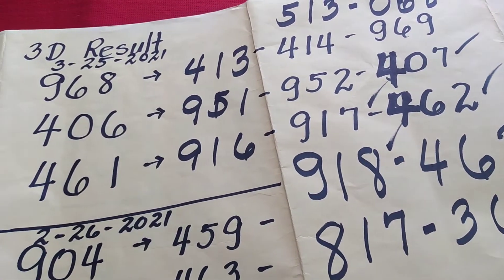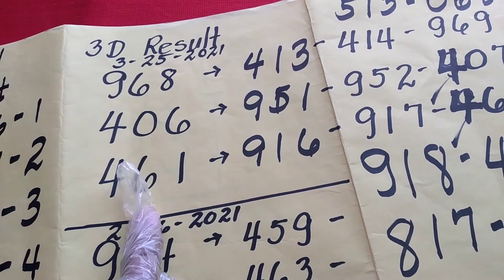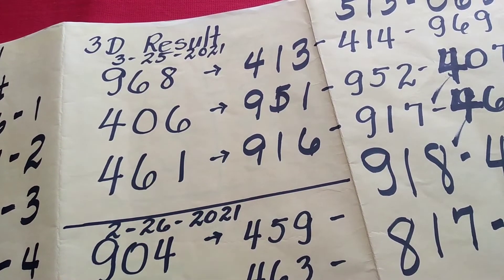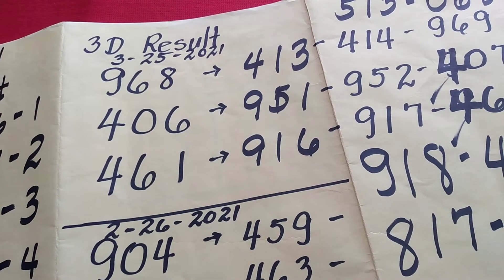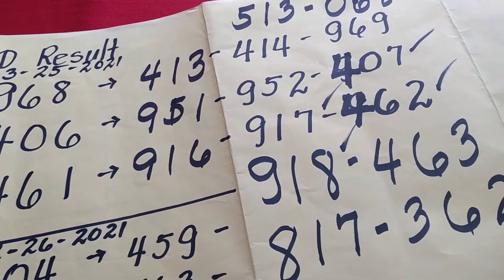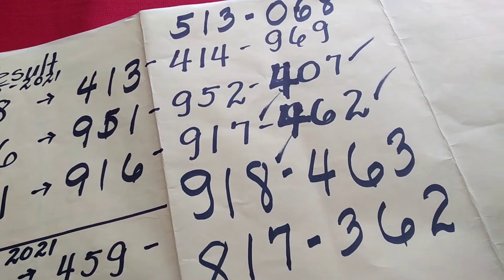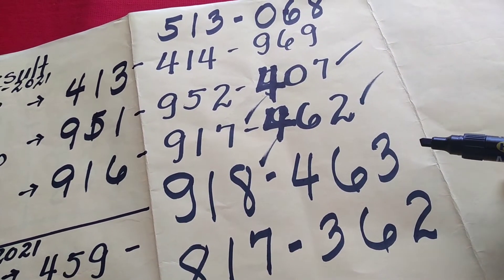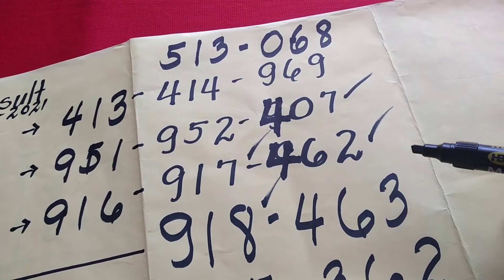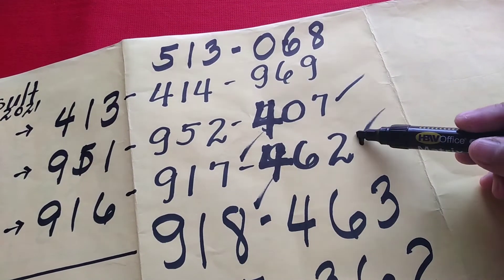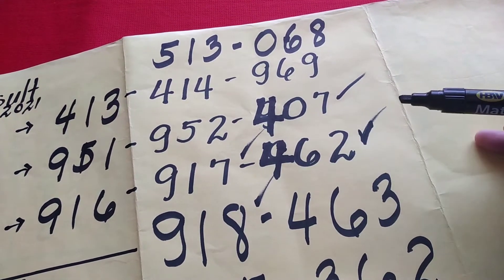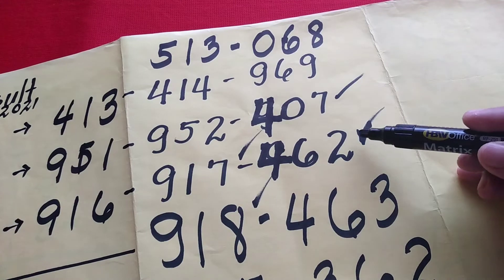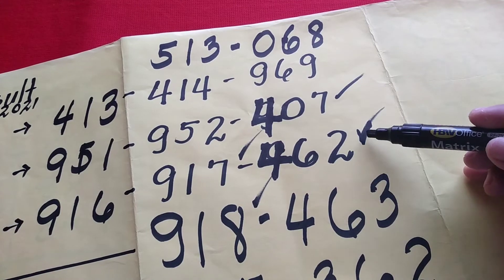Yung 4, 6, 2 na lumabas kagabi, bakal dagdagan nila ng isa. Ito ay magiging 4, 6, 2. O dagdagan natin ng isa, eto: 4, 6, 2. Diba? Ang 4, 6, 1, dagdagan natin ng isa, 4, 6, 2.